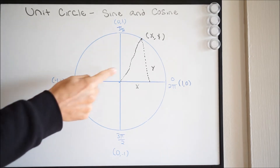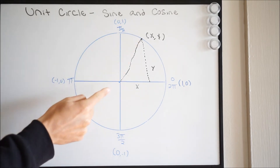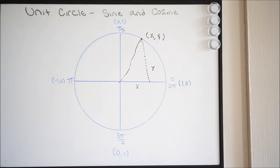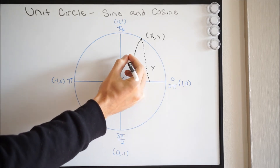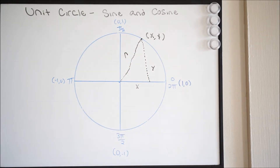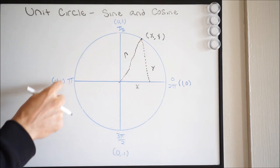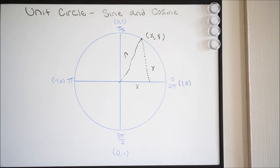Now we know that right here is going to be our hypotenuse. In this case, this is going to be our radius, which we call r. So if we look at our unit circle, we know that our radius, when going around this unit circle, is going to remain constant, and it's always going to be 1.